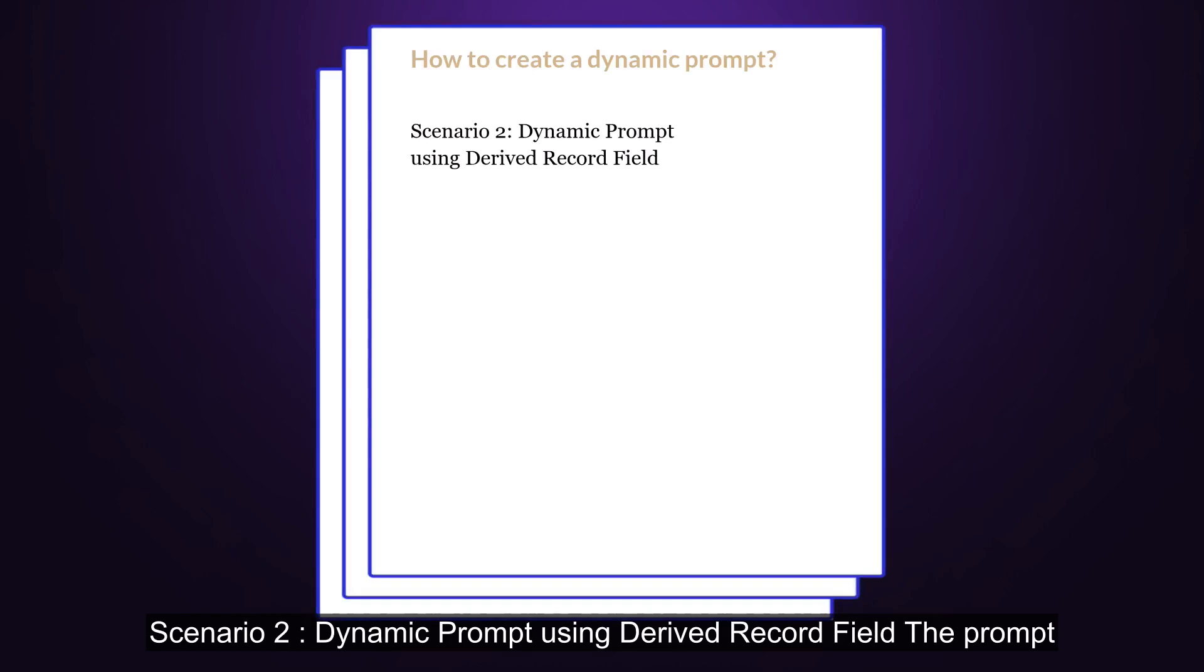Scenario 2: Dynamic Prompt Using Derived Record Field. The prompt table for a field can be different depending on the value that user selects from another field. This is also called a dynamic prompt, and it can be implemented using a field that is defined in record type Derived/Worked and is another way of implementing dynamic prompts.